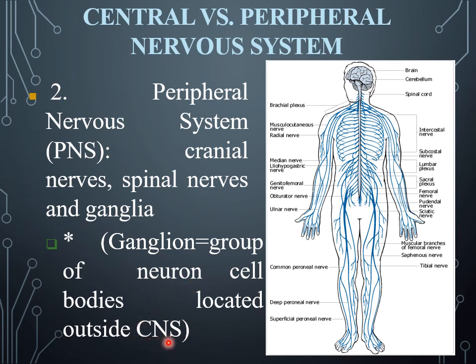Ganglia are basically groups of neuron cells that are located outside the CNS — meaning they are located outside of the brain and spinal cord region. So all these nerves are basically part of the peripheral nervous system, which are outside the CNS.